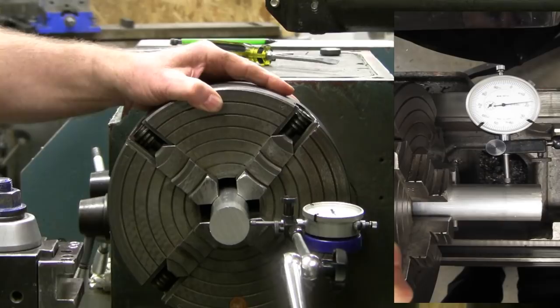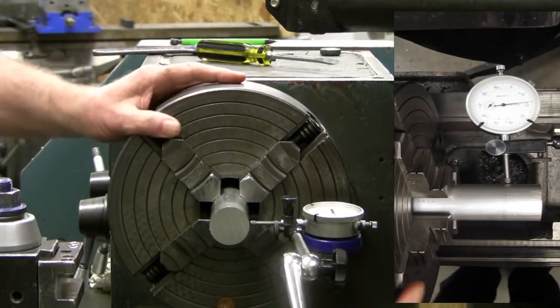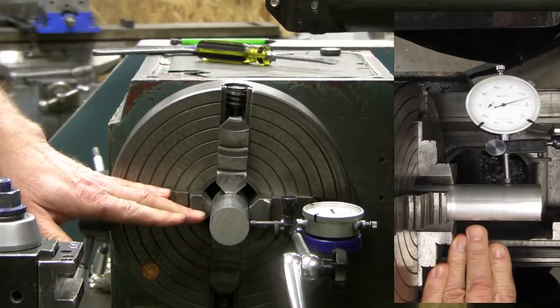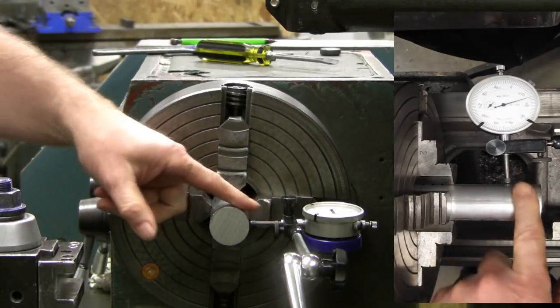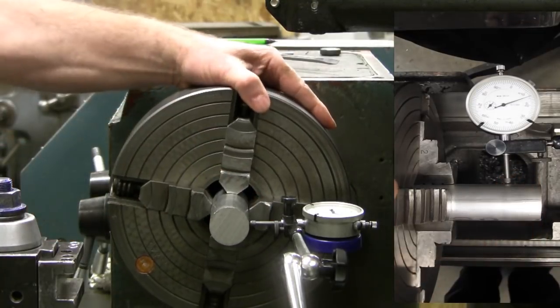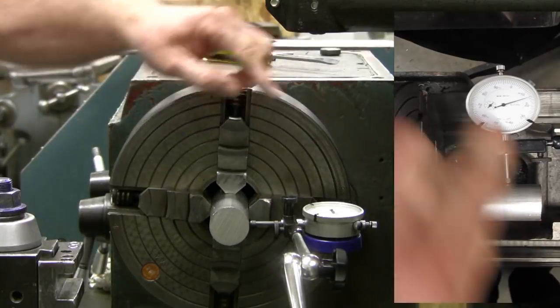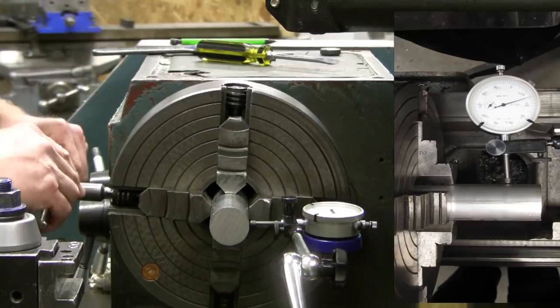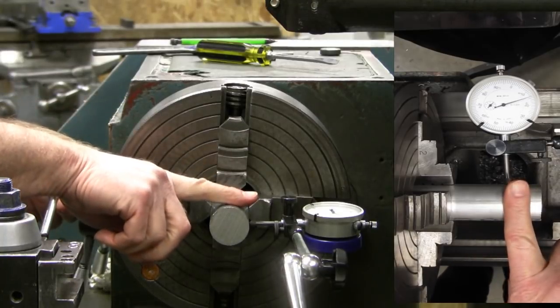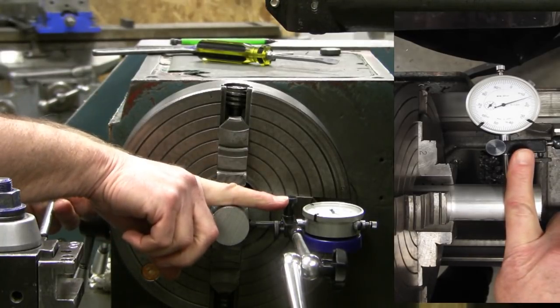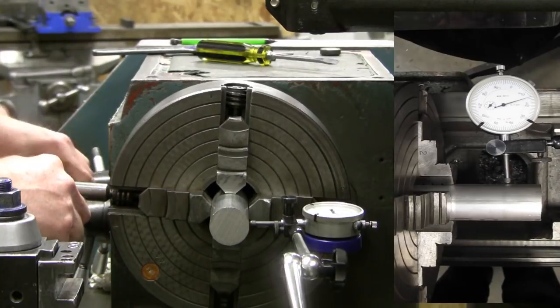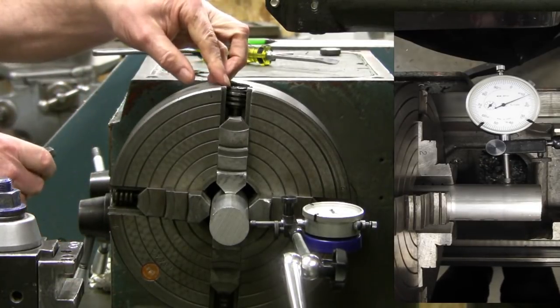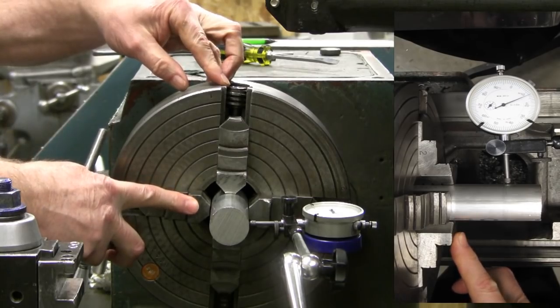Next thing I want to do is line up the chuck jaws in line with the stem of the indicator, and right now they are. With the indicator pointed clockwise to the right, that means the needle is pushed on it. So I'll loosen up this chuck jaw a little bit. Don't need very much. This is no longer touching but these two are holding the part.